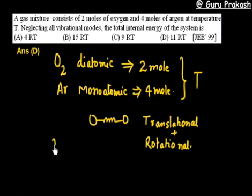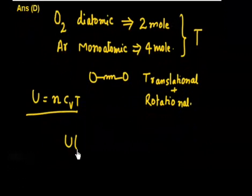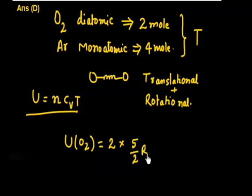Translational plus rotational. So internal energy is given by the function N, C, V, T. So the question says calculate the total internal energy of the system. So initially what is the internal energy of oxygen. So you calculate the internal energy of oxygen. So internal energy of oxygen is N, C, V, T. And N is 2 mol. And C V, so monoatomic gas, diatomic gas. If you remember the C V for diatomic gas is 5 by 2 R. This multiplied by T. So this is 5 R T. Simple.